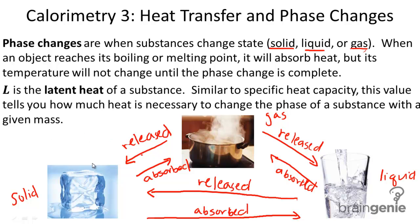The last term, L, is the latent heat of a substance. Very similar to specific heat capacity, this value tells you how much heat is necessary to change the phase of a substance with a given mass. Every different substance will have a different L value — given a certain amount of mass, how much heat do you need to add to actually change the phase?